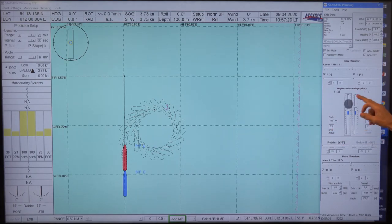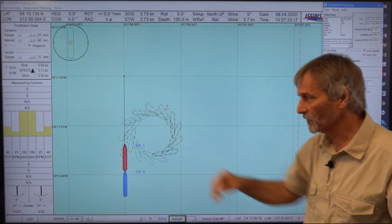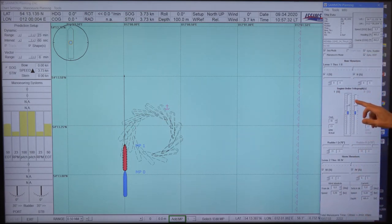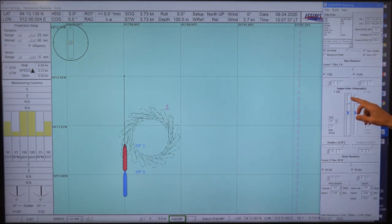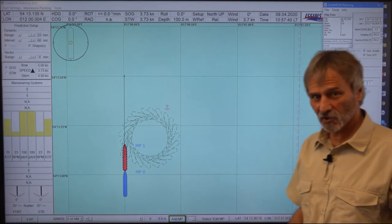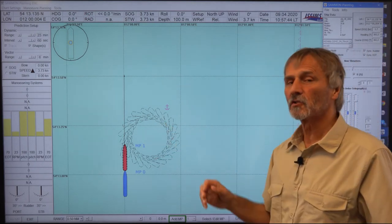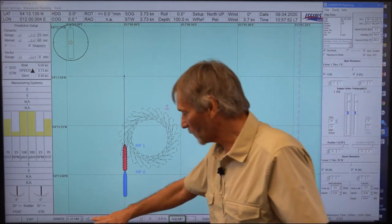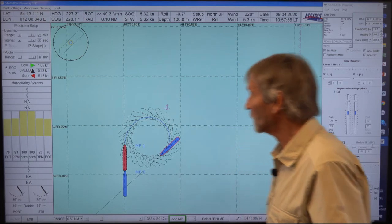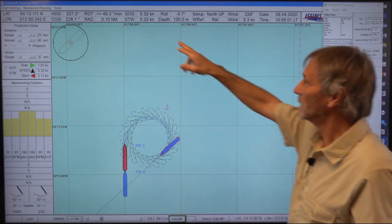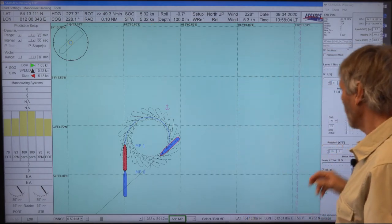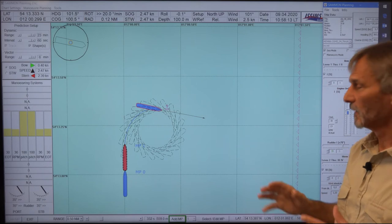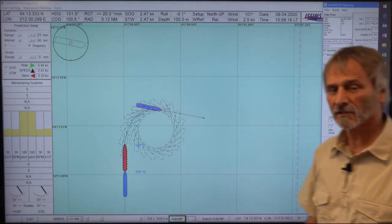If I kick it even more to 40 percent then you see it's still reducing the so-called advance. So the distance in the former direction is smaller. Even up to 50 percent, 60 percent. So this is the effect of so-called kick turns. So you can reduce the advance but you should be aware that then the speed of the vessel is getting higher. So if we go for instance on a reference position like this here, now the speed is with a kick turn of 70 percent, the speed is 5.3 knots. If I kick it less then the speed is only 2 knots. So if you kick it more then the speed on the turning circle is higher.